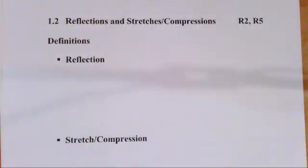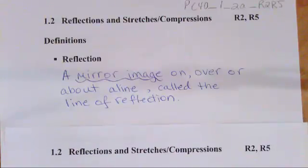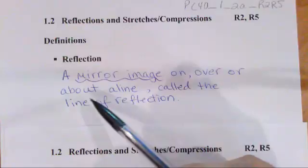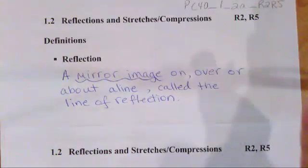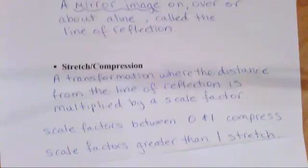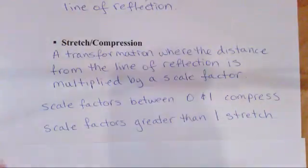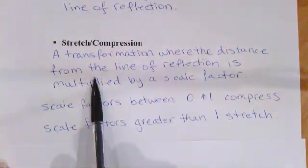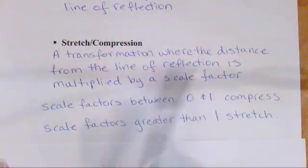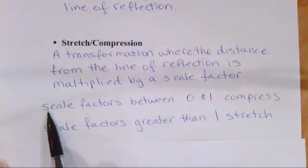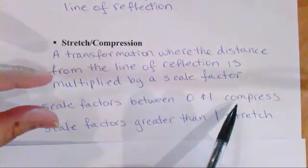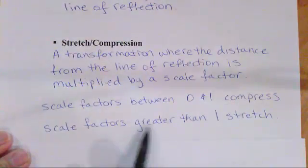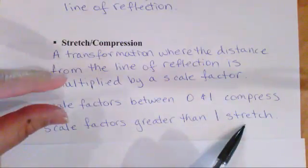A reflection is a mirror image on, over, or about a line called the line of reflection — we're flipping back and forth either over the y or the x-axis. For stretches and compressions, it's a transformation where the distance from the line of reflection is multiplied by a scale factor. If the scale factor is between zero and one it's a compression — something gets smaller or squished — and if it's greater than one it's a stretch, getting bigger or longer.